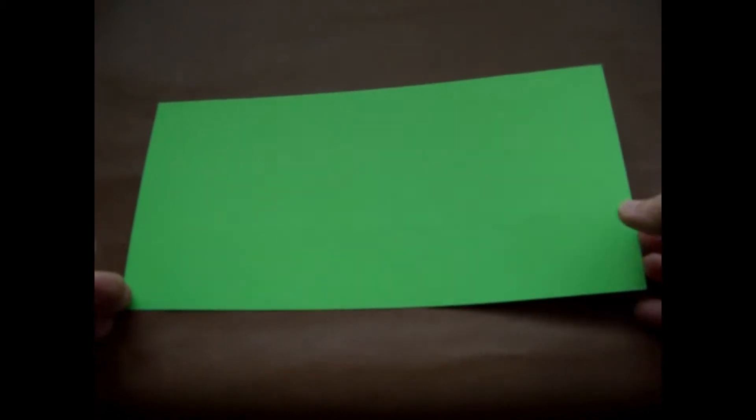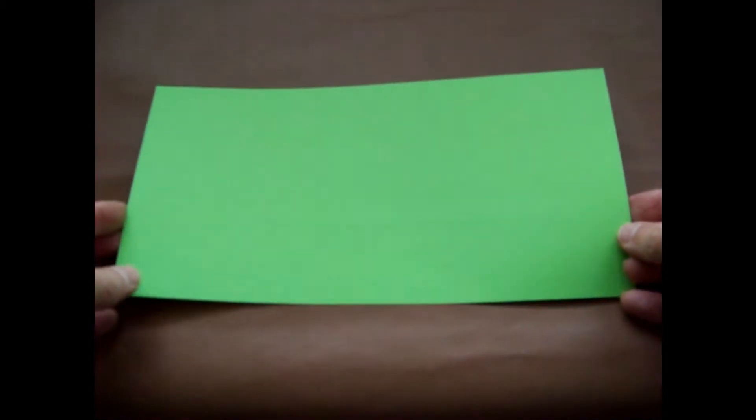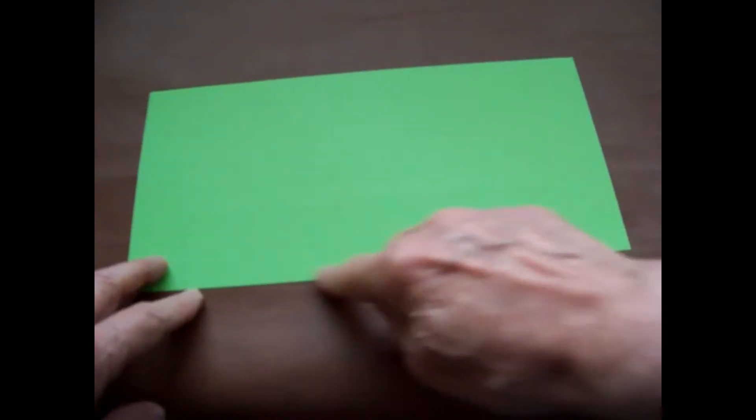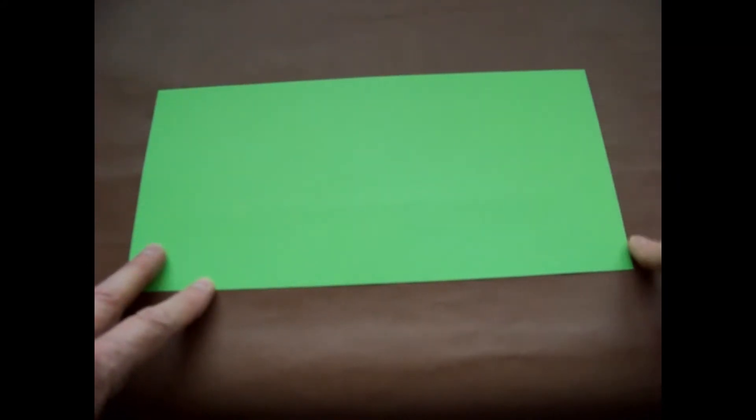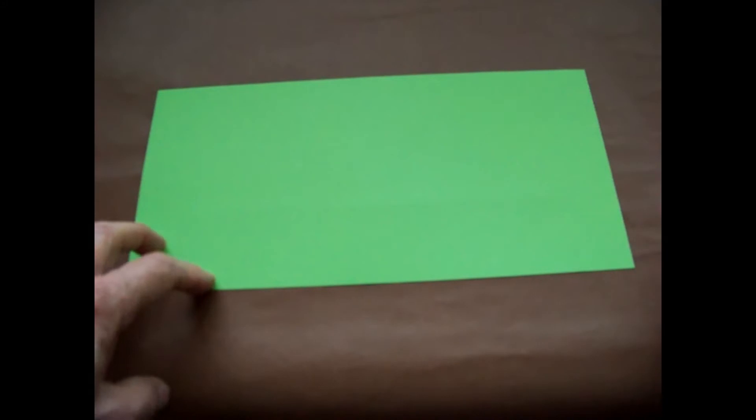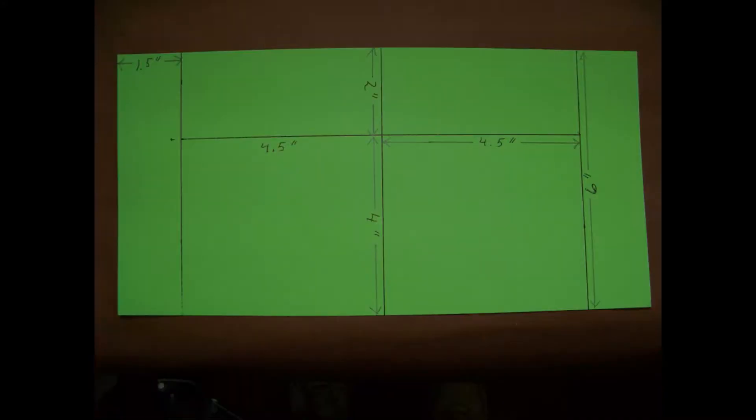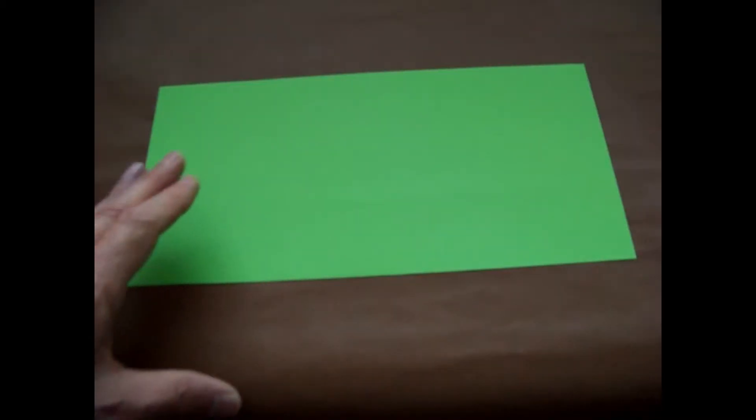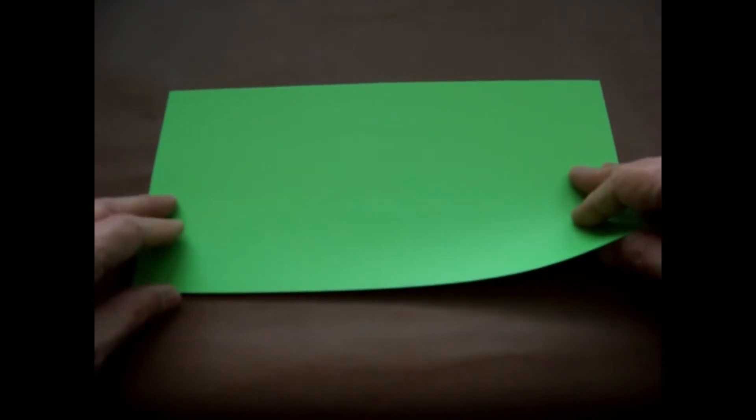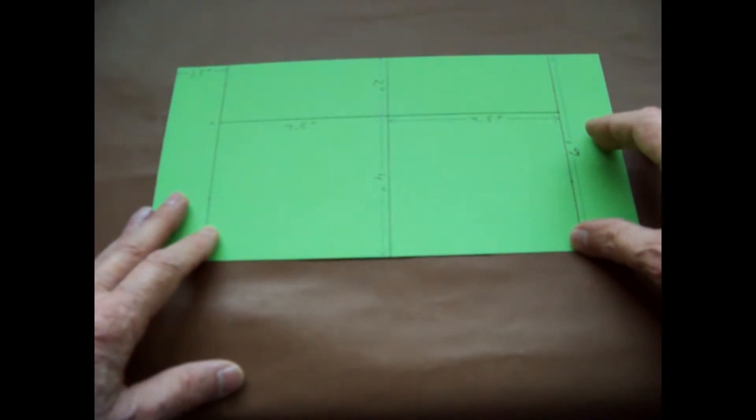We begin with a sheet of card stock that is 12 inches by 6 inches. From this piece of card stock, we will cut 6 rectangles.